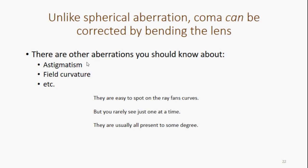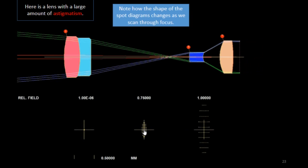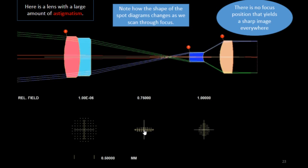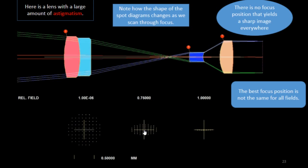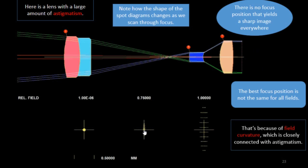Now, there are other aberrations you should know about, astigmatism, field curvature, and so on. They're easy to spot. You rarely see just one at the same time. And they're usually all present to some degree. Here's a lens with a large amount of astigmatism. Let's watch what happens as I change the focus position. See how this turns into a line. And then it turns into a line this way. But meanwhile, the other field point turns into a line at a different position. The spot diagrams change as we scan through focus. There is no focus position that yields a sharp image everywhere. And the best focus is not the same for all fields because of field curvature, which is closely connected with astigmatism.